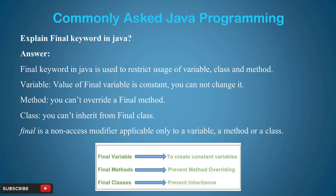The interviewer may ask a direct question: explain final keyword in Java. But many interviewers will twist the question and ask: how to create a constant variable? How will you make a variable constant in your program? How to prevent inheritance? How to prevent method overriding? So you should know that the answer involves the final keyword. Moving on to the next question.